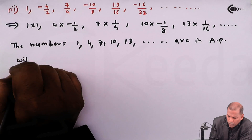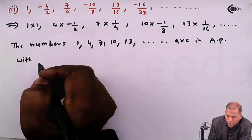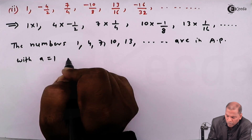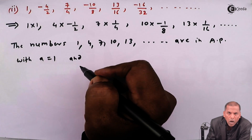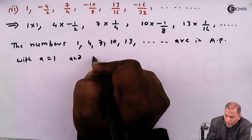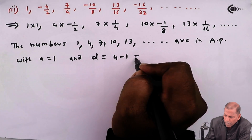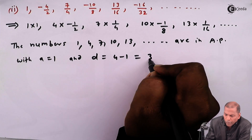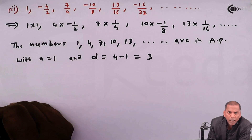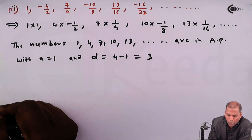With first term a = 1 and common difference d = 4 - 1 = 3. Now we consider the second numbers only.